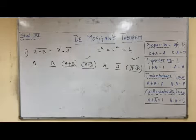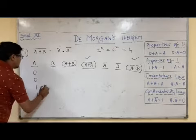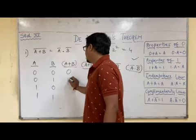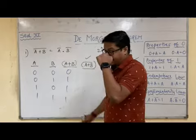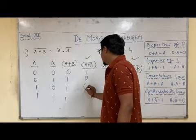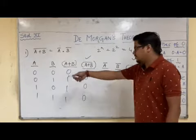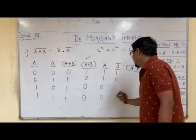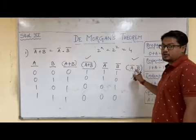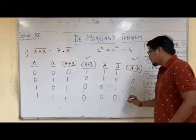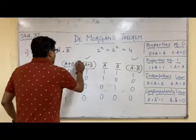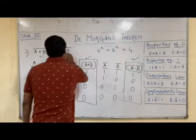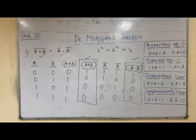Filling in the truth table with entries 00, 01, 10, 11: A plus B gives 0, 1, 1, 1. A plus B whole bar (reverse) gives 1, 0, 0, 0. A̅ gives 1, 1, 0, 0. B̅ gives 1, 0, 1, 0. A̅ dot B̅ gives 1, 0, 0, 0. As you can see, A plus B whole bar and A̅ dot B̅ columns are the same — proving De Morgan's theorem using the truth table.